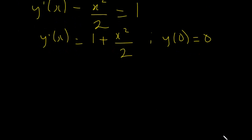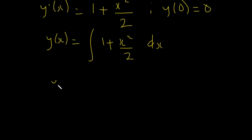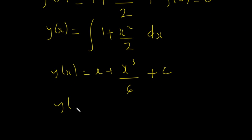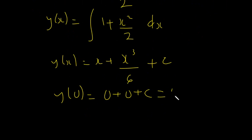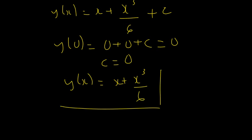Now we solve y'(x) = 1 + x squared over 2 by integrating: y(x) = x + x cubed over 6 + C. Applying the initial condition y(0) = 0: 0 = 0 + 0 + C, so C = 0. Therefore y(x) = x + x cubed over 6. This is the solution to the Volterra integral equation.